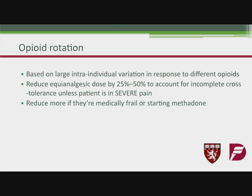Opioid rotation is based on large inter-individual variation in response to different opioids. Generally when we change, we first calculate an equianalgesic dose and then reduce it by 25% to 50% because there's incomplete cross-tolerance of respiratory depression and sedation between opioids. If the patient is in severe pain, we might not dose-reduce and instead should be increasing by 25% to 50%. For someone like Melanie in so much pain, we generally wouldn't dose-reduce. If they're frail or we're starting methadone, a different process applies.